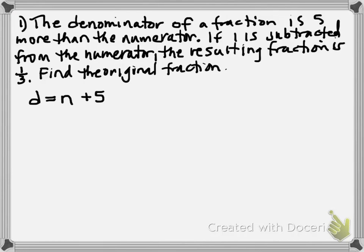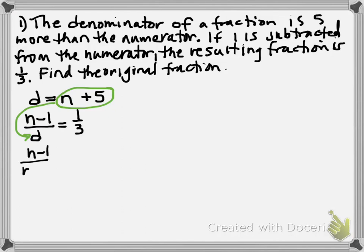So it already looks like we're going to use substitution on this. If one is subtracted from the numerator, the resulting fraction is one-third. When they say that, what they're saying is that the numerator is part of a fraction — n minus one over d equals one-third. We know what d is, so we substitute and get n minus one over n plus five equals one-third.